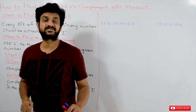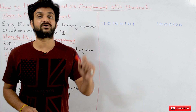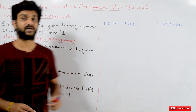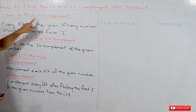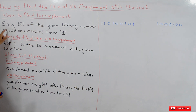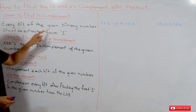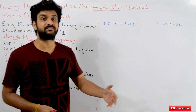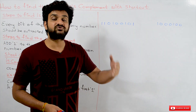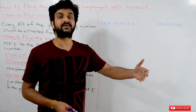Coming to this class: how to find the ones complement and twos complement of a given number. Steps to find the ones complement: every bit of the given binary number should be subtracted from one.